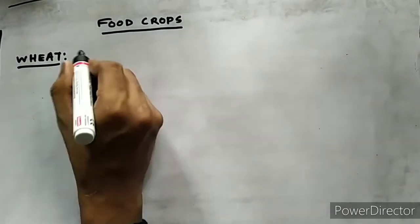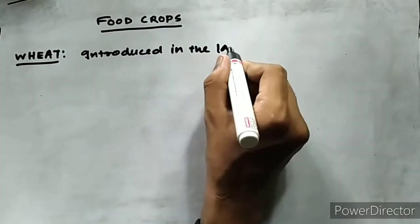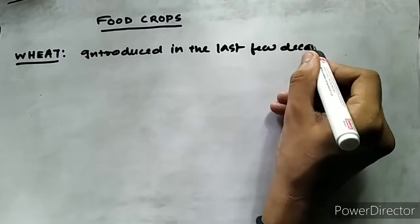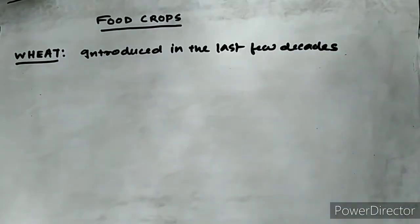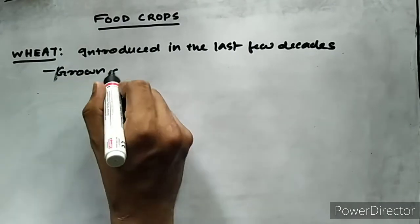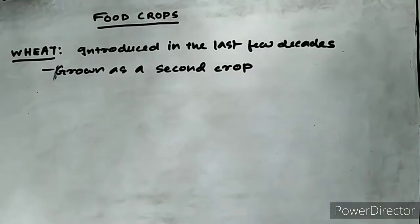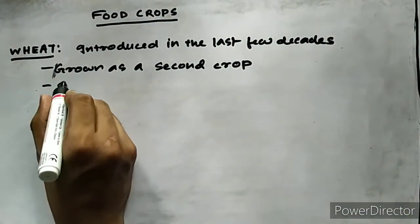Last class we discussed about rice, and today's topic is wheat. Wheat was introduced in Assam in the last few decades. It is carried out as a supplementary crop by some farmers over the higher lands, normally grown as a second crop on less productive land.